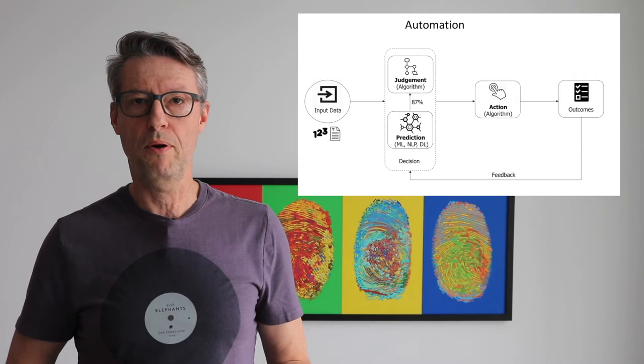And you can also automate the action. You can use programming, traditional programming, or you can use robotic process automation to automate. Maybe part of the task was previously handled by a human, and now you automate it with artificial intelligence and traditional programming — all the elements of these tasks.